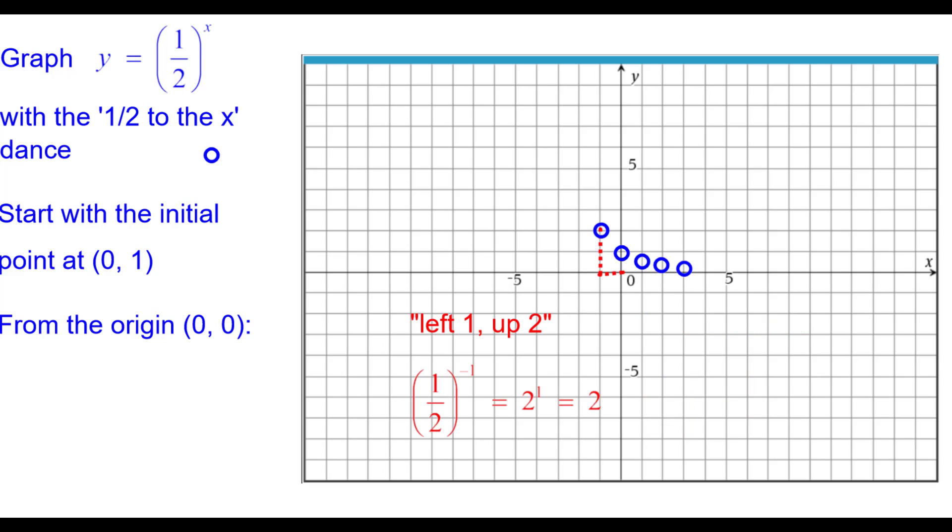On the other side, left 1 up 2 because 1 half raised to the negative 1 power. Remember, the negative 1 power means take the reciprocal. So that's 2. So it's negative 1 comma 2.